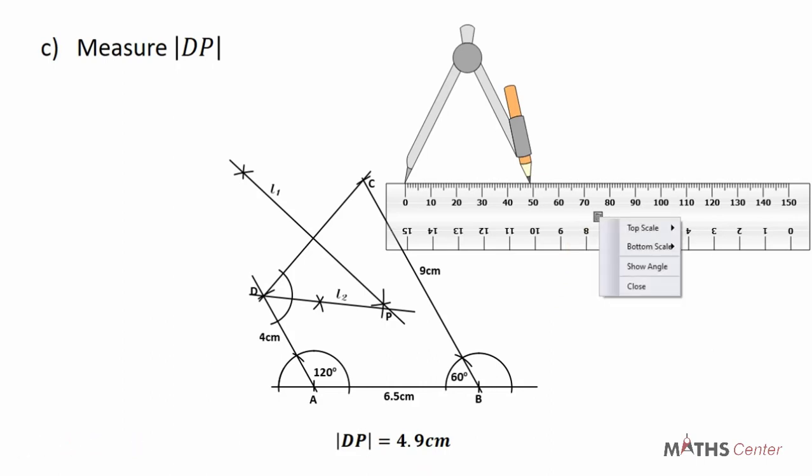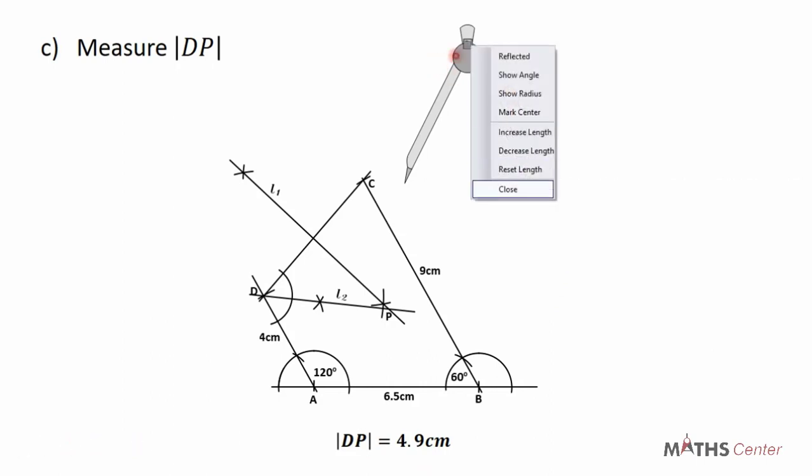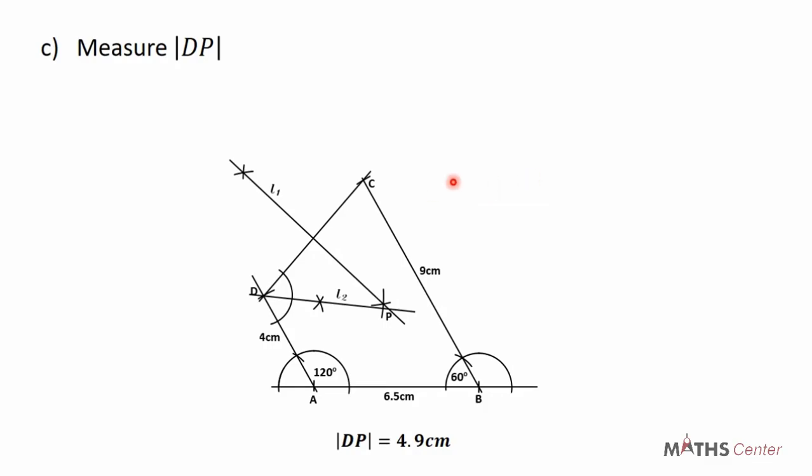I'm going to take both the compass and the ruler off so that you can see the quadrilateral clearly.